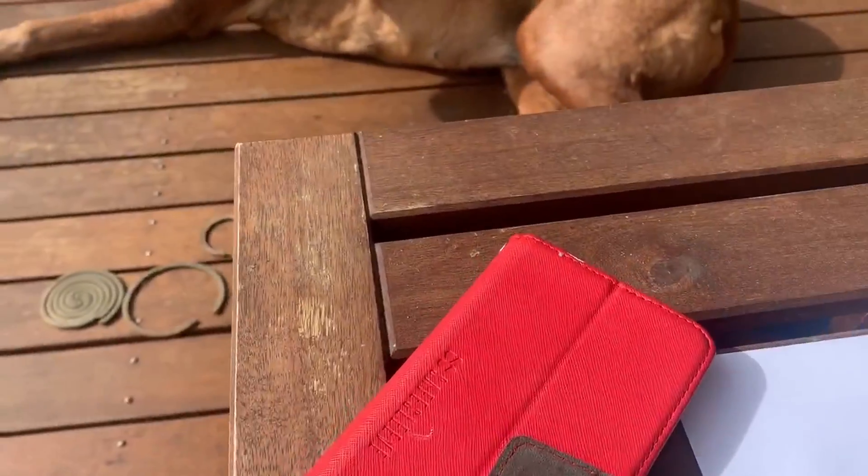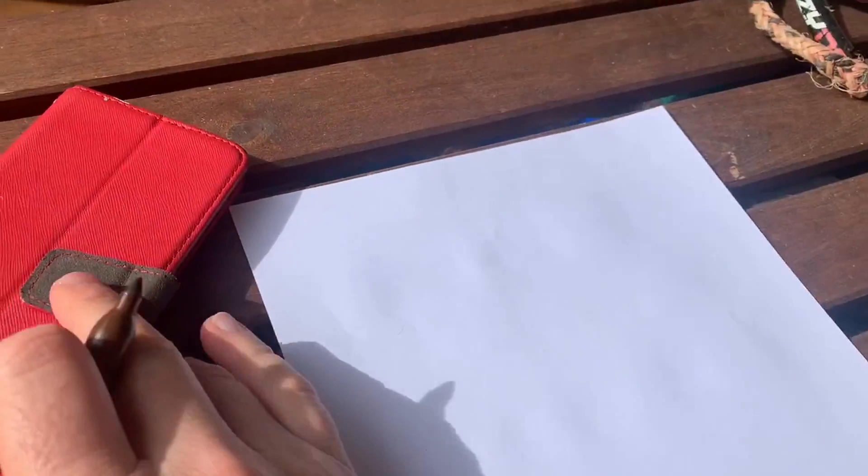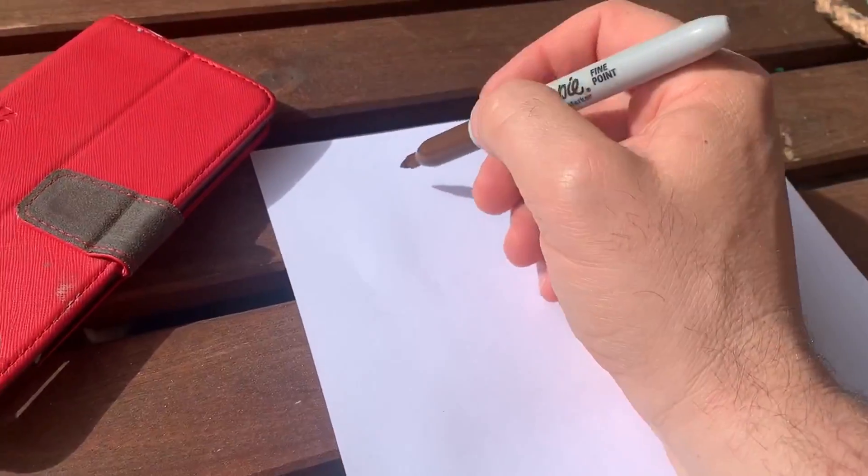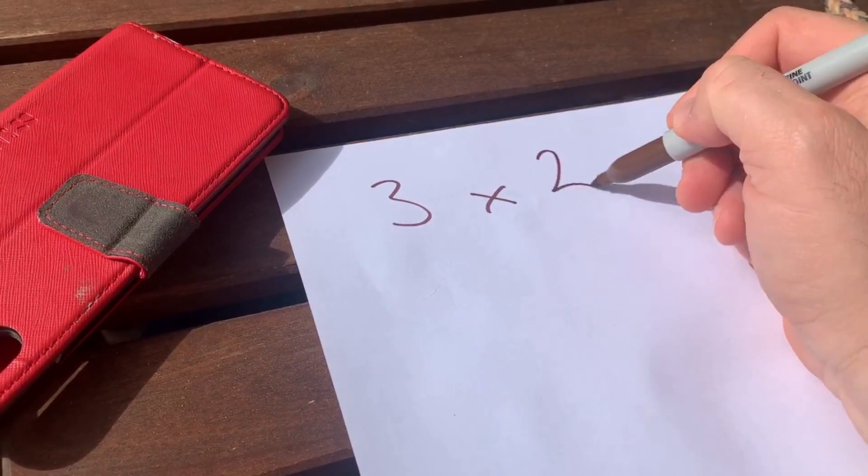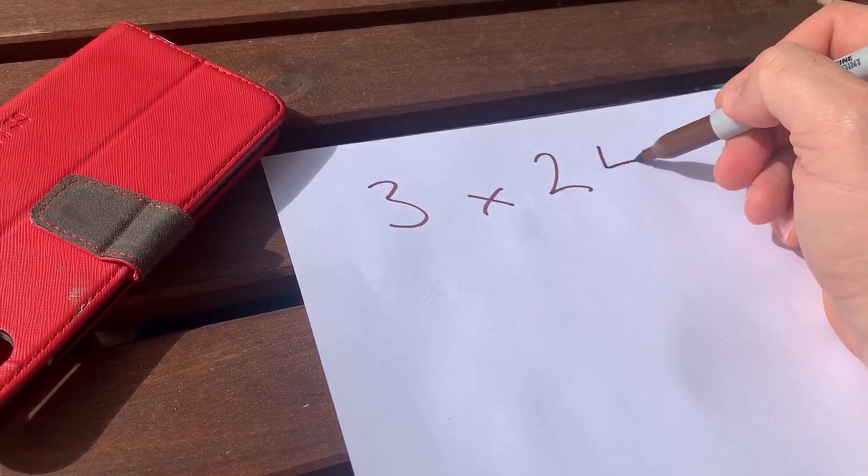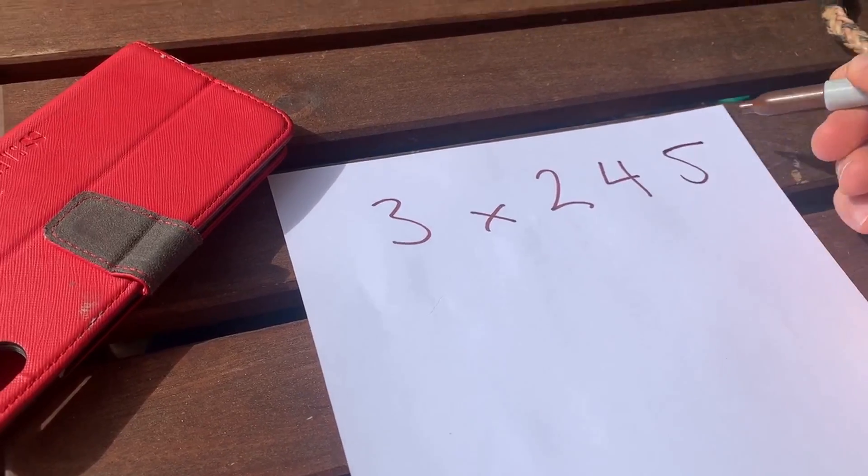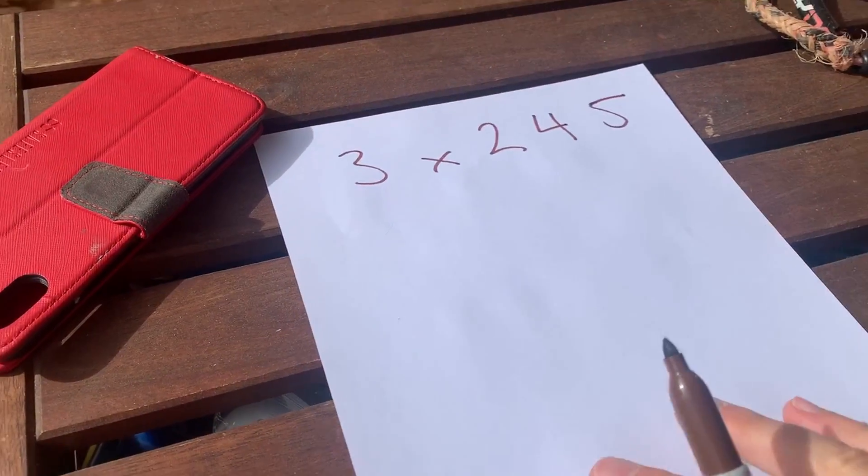So the way, given you won't have a whiteboard probably at home, this is the way I would do it. Let's say the sum that we're working out is 3 times 245. Okay, so if I'm doing my number talk...